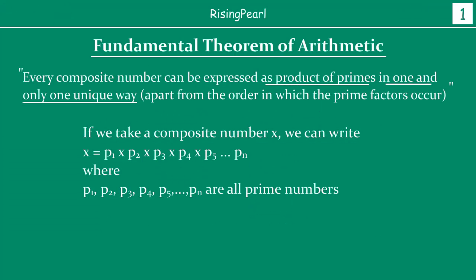We have seen in our earlier videos what we mean by the Fundamental Theorem of Arithmetic. What it states is the following: every composite number — every single composite number — can be expressed as a product of primes in one and only one unique way, if we do not consider the order in which the prime numbers are written. So it means that if we take a composite number x, we can write x as a product p1 × p2 × p3 × ... × pn, where p1, p2, p3, ..., pn are all prime numbers.